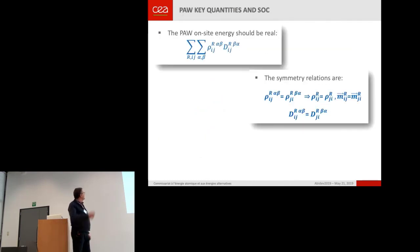This quantity in the standard constant Hamiltonian was real. Okay, so what is the consequence on the PAW quantities? The consequence is, the total on-site energy is still real, but the symmetry relation change.